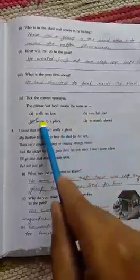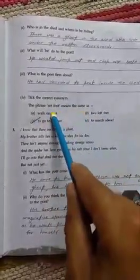Now you have to take the correct synonym for 'sad food.' Sad food means to go to a place.